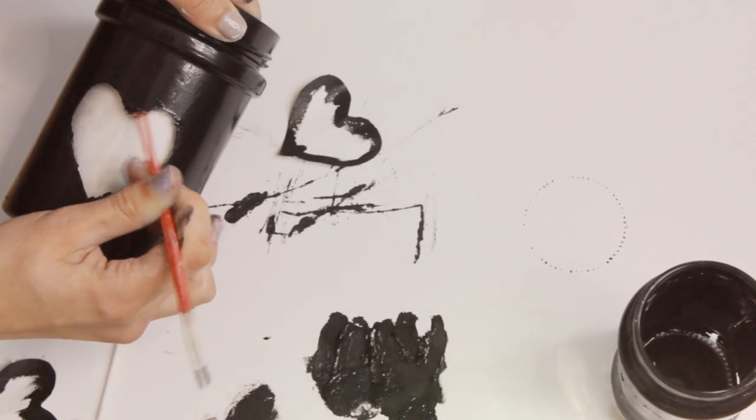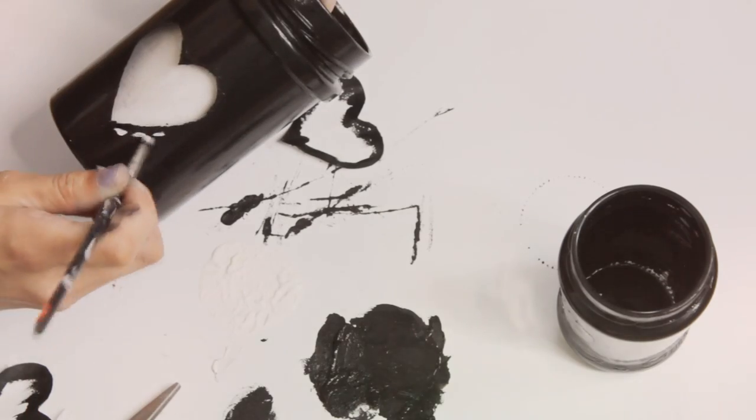Next I'm taking some white acrylic paint and just creating a stitch effect all around the heart for a little accent.